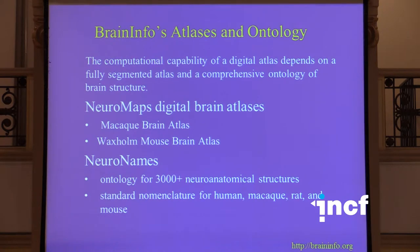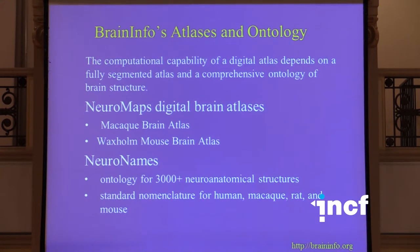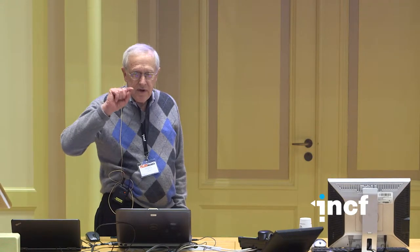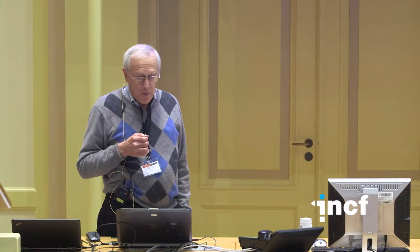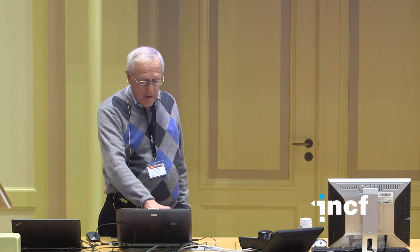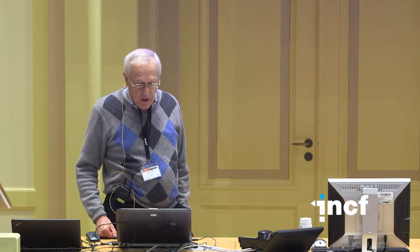Our system is based on those premises. The computational capability of a digital atlas depends on a fully segmented atlas and a comprehensive ontology of brain structure. The Neuromaps macaque brain atlas has been segmented into approximately 400 structures, and we have the Waxholm mouse brain atlas, which has been subdivided into 50 or 70 structures.